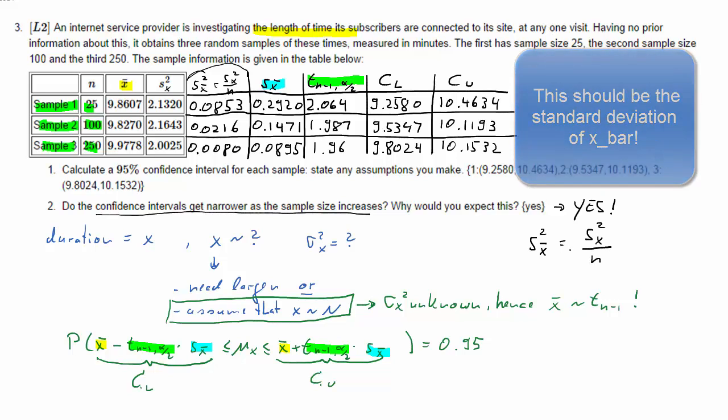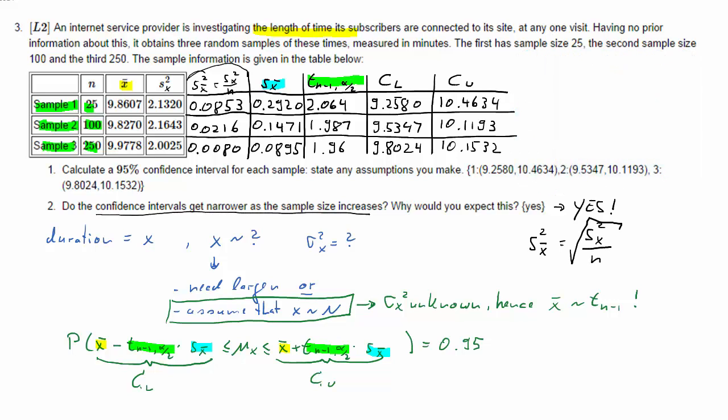Standard deviation of X bar, that is the square root of S, the variance of X, which is more or less the same across all samples, that doesn't change with the sample size. But divided by the sample size. So as the sample size goes up, that standard deviation of X bar goes down, and therefore the values we subtract and add to the sample mean decrease, reducing the width of the interval.